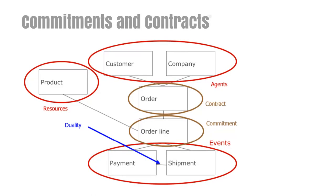An order is essentially a grouping of a number of order lines with some additional rules attached. For example, specifying what would happen if a shipment or a payment is delayed or if a delivered product is damaged — in such cases there will typically be some kind of compensation or penalty. This means that we can view an order as a contract between the agents specifying which commitments they have to each other, and in addition, the rules that govern in detail how these commitments should be fulfilled. So we classify an order as a contract.